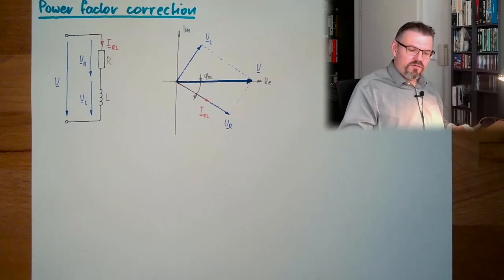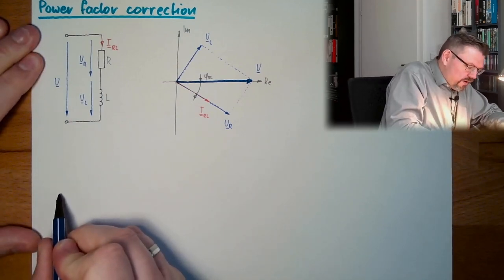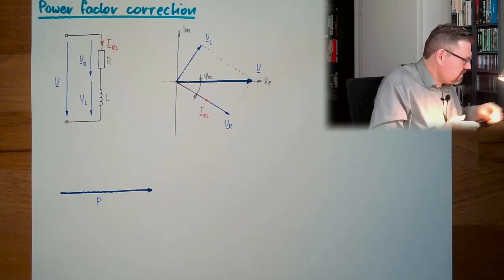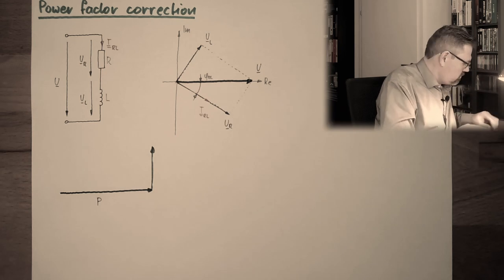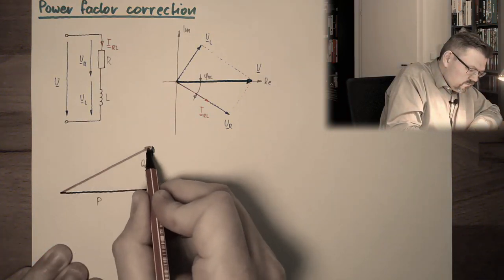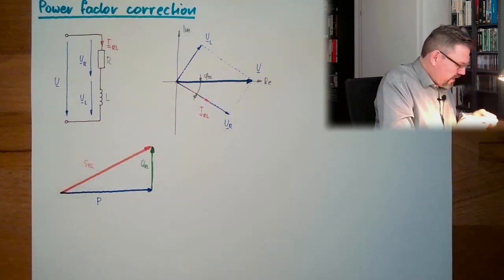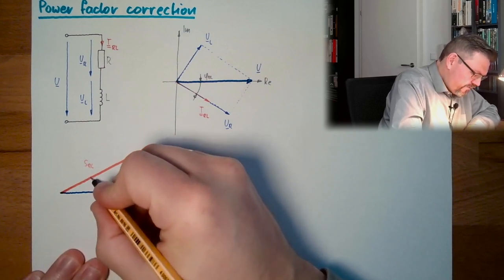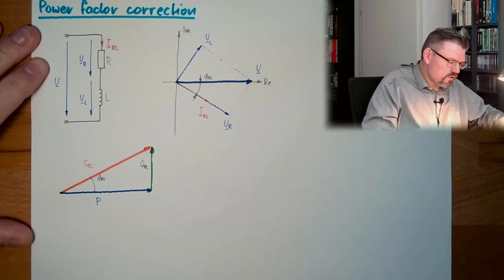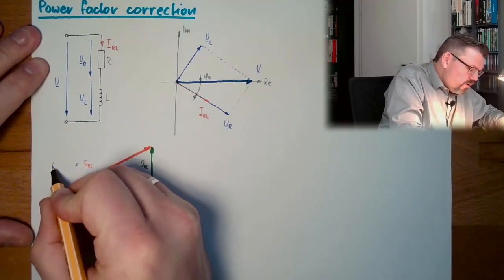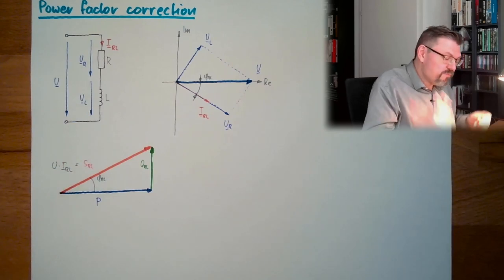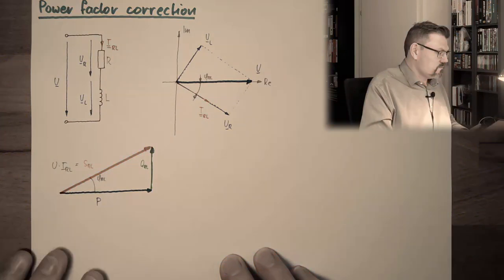So let's have a look at our power triangle. We have here our active power P. We have a certain reactive power Q_RL, this is Q_RL. And we have an apparent power, here, this is S_RL. And here we have our phi_RL, our phase angle. This is how this would look like. This is the situation. Here, this S_RL is actually U multiplied by I_RL. This is U multiplied by I is the apparent power, the absolute value of the apparent power.